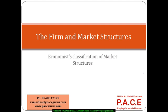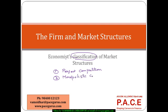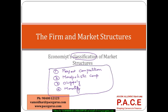Let us look at the firm and the market structures, primarily focusing on a typical economist classification of the market structures. Economists classify the market structures into four broader categories: perfect competition, monopolistic competitive markets, oligopoly, and monopoly. There could be a few more additional classifications, but these form the significant differentiating classifications for different kinds of industries and products.